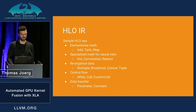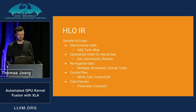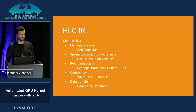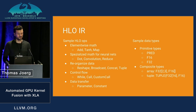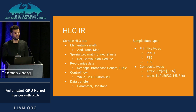HLO IR comes with operators for mostly linear algebra — simple things like element-wise math or more special math for neural networks like dots or convolutions. It has operators that allow you to reorganize your data: reshape your tensors or broadcast them along different dimensions, and some control flow like while-loops, and things that help you transfer data in and out of your XLA computations. All data types are known at compile time. It supports primitive types — floating points at different precision — and composite types like multidimensional arrays (tensors), and also tuple types that allow you to return multiple values from one operation.